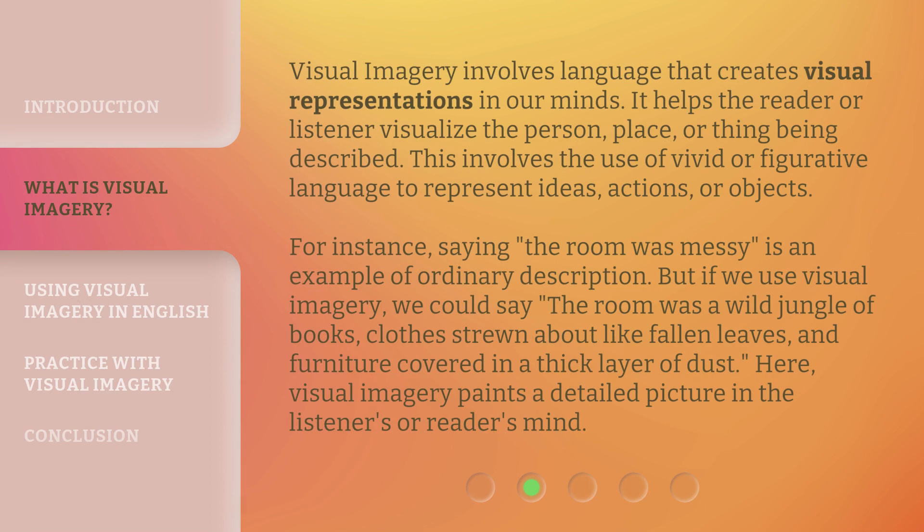Visual imagery involves language that creates visual representations in our minds. It helps the reader or listener visualize the person, place, or thing being described. This involves the use of vivid or figurative language to represent ideas, actions, or objects. For instance, saying 'the room was messy' is an example of ordinary description. But if we use visual imagery, we could say 'the room was a wild jungle of books, clothes strewn about like fallen leaves, and furniture covered in a thick layer of dust.' Here, visual imagery paints a detailed picture in the listener's or reader's mind.